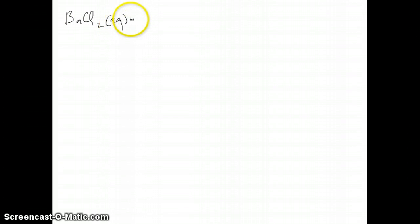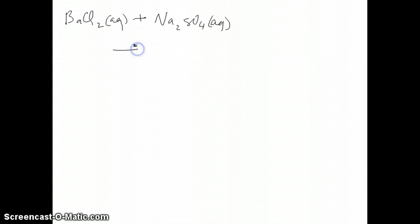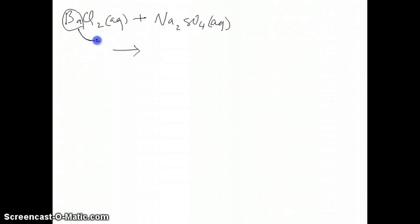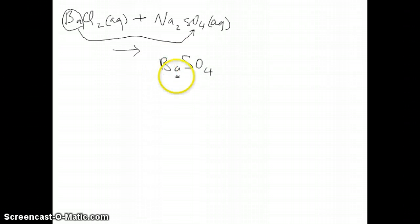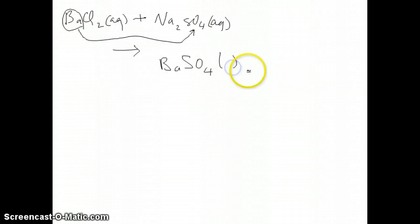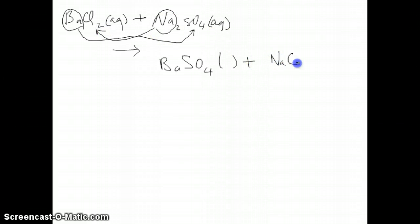The first reaction is BaCl₂ plus Na₂SO₄, both aqueous. The first thing we're asked to do is predict the products — it's a double displacement reaction, so we just swap the cations. Barium partners up with sulfate, giving barium sulfate as one product. Barium is a +2 cation, sulfate is a −2 anion, so they form BaSO₄. The other product is sodium combined with chloride, giving sodium chloride. To balance the reaction, you put a 2 in front of sodium chloride. We'll look up the solubility table to determine the states of matter.